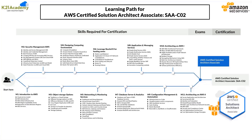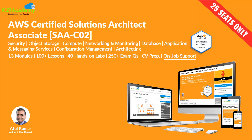We have put down everything about the certification including basic concepts: introduction to AWS, security management, object storage options, designing computing environments, networking and monitoring services, leveraging Route 53 for hosting zones, database server analytics, application and messaging services, configuration management and automation, and architecting on AWS. In this training, we take you from basic to advanced level with tips and resources for clearing the certification exam. We also have a separate team for CV preparation and job support, with a comprehensive step-by-step training that includes hands-on labs, exam preparation, and one year of on-job support.